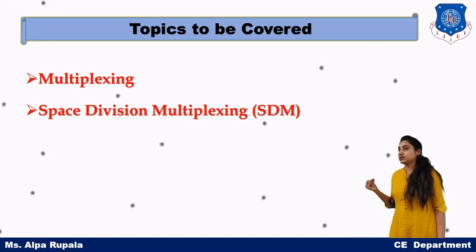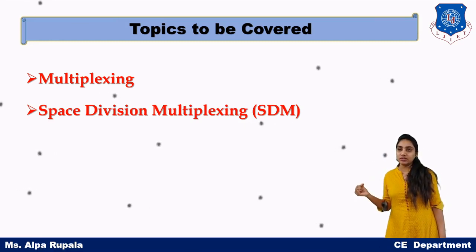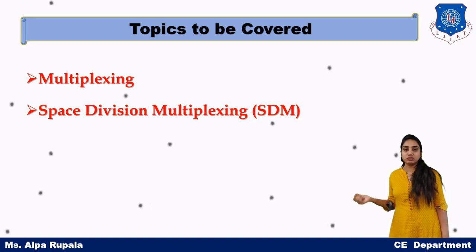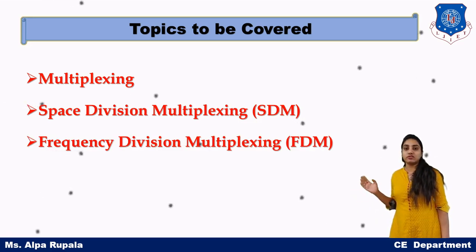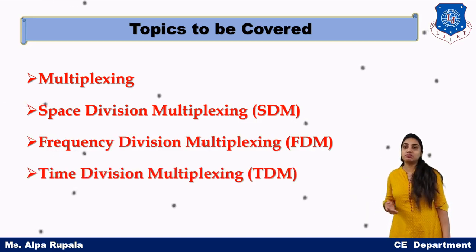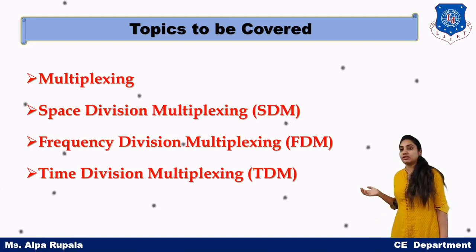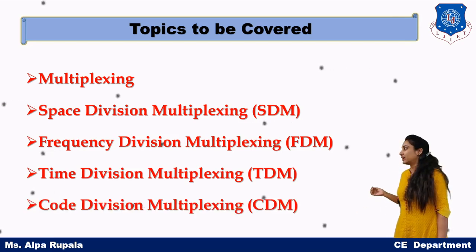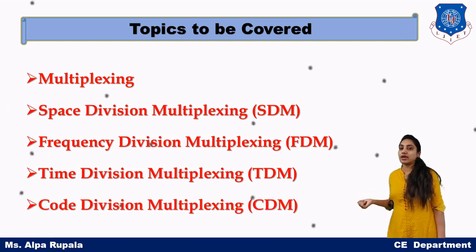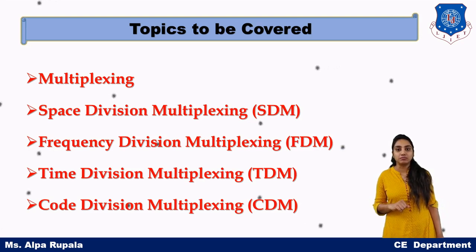The first type is SDM, that is Space Division Multiplexing. The second is FDM, that is Frequency Division Multiplexing. The third is TDM, that is Time Division Multiplexing. And the fourth is CDM, that is Code Division Multiplexing.